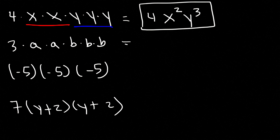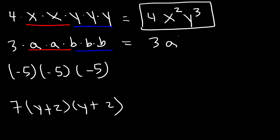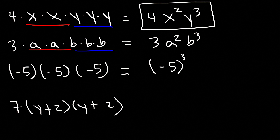For the second problem, we have one 3, two a variables, and three b variables. So this is going to be 3a squared b cubed. In the next example, we have negative 5 multiplied three times, so it's negative 5 to the 3rd power, which we can reduce to a single number. Negative 5 times negative 5 is positive 25, and positive 25 times negative 5 is negative 125.